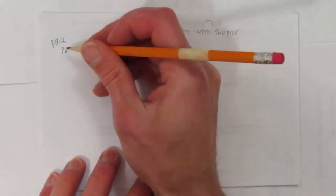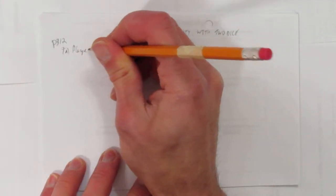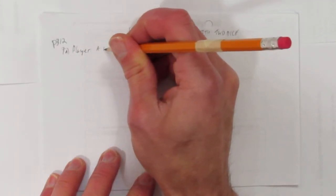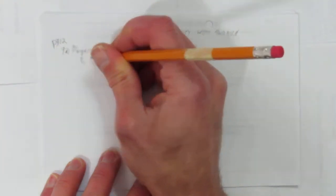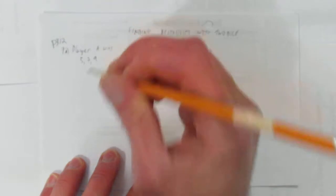So the question is a game involves rolling two dice and player A wins. Let's write this down. Player A wins on a 5, a 7, or a 9. Otherwise player B wins.